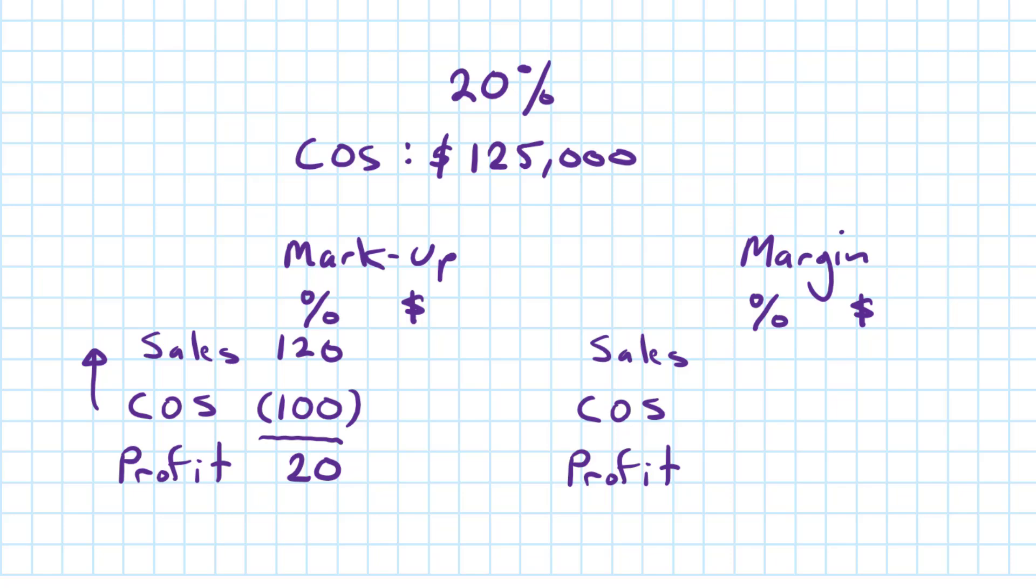Next to the cost of sales, I'll plug in the $125,000. And then using the concept of ratios, I'll multiply the 125 by the 120, divide by 100, and I can get the markup selling price, which is $150,000.